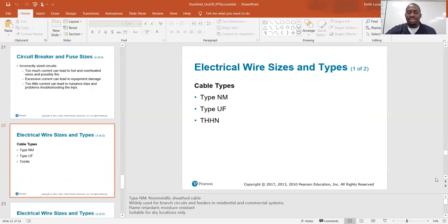Electrical wire sizes and types. Cable types: Type NM, Type UF, THHN. Type NM: non-metallic sheathed cable, widely used for branch circuits and feeders in residential and commercial systems, flame retardant, moisture resistant, suitable for dry locations only.